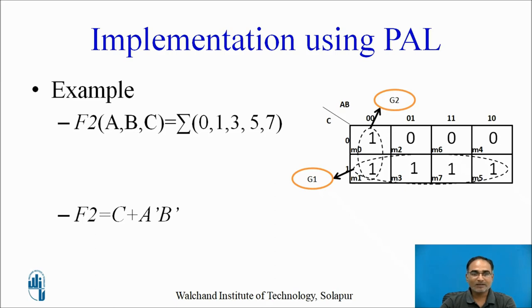Now let us take a second three-variable function f2, which is the summation of minterms 0, 1, 3, 5, and 7. Using KMAP for minimization, two groups G1 and G2 are found. For group 1 the expression is C, and for group 2 the product term is A'B'. So f2 = C + A'B'.